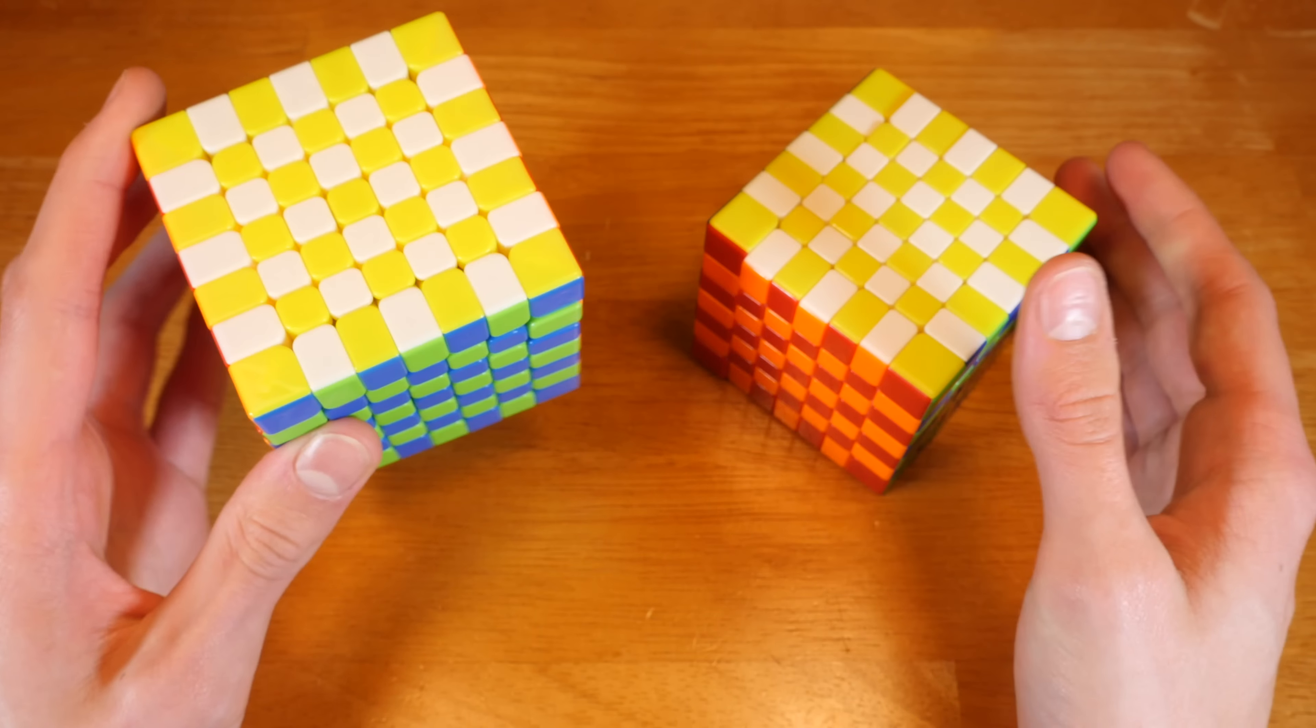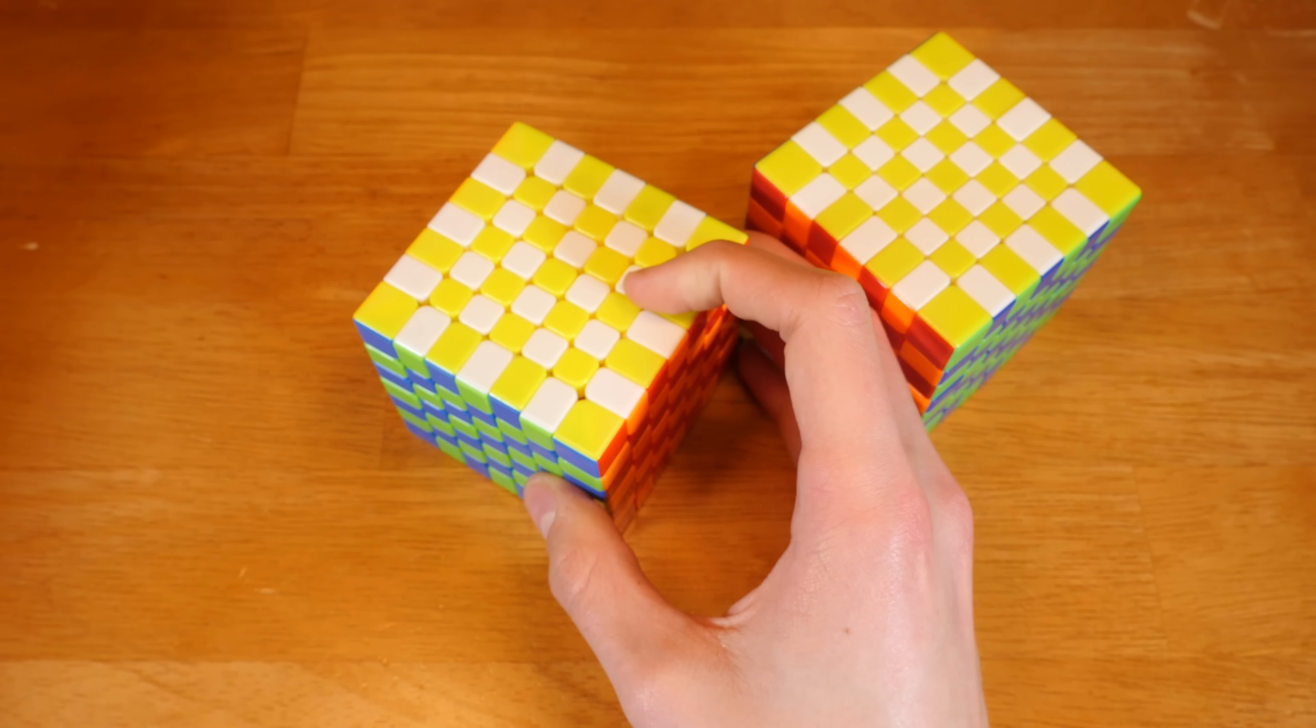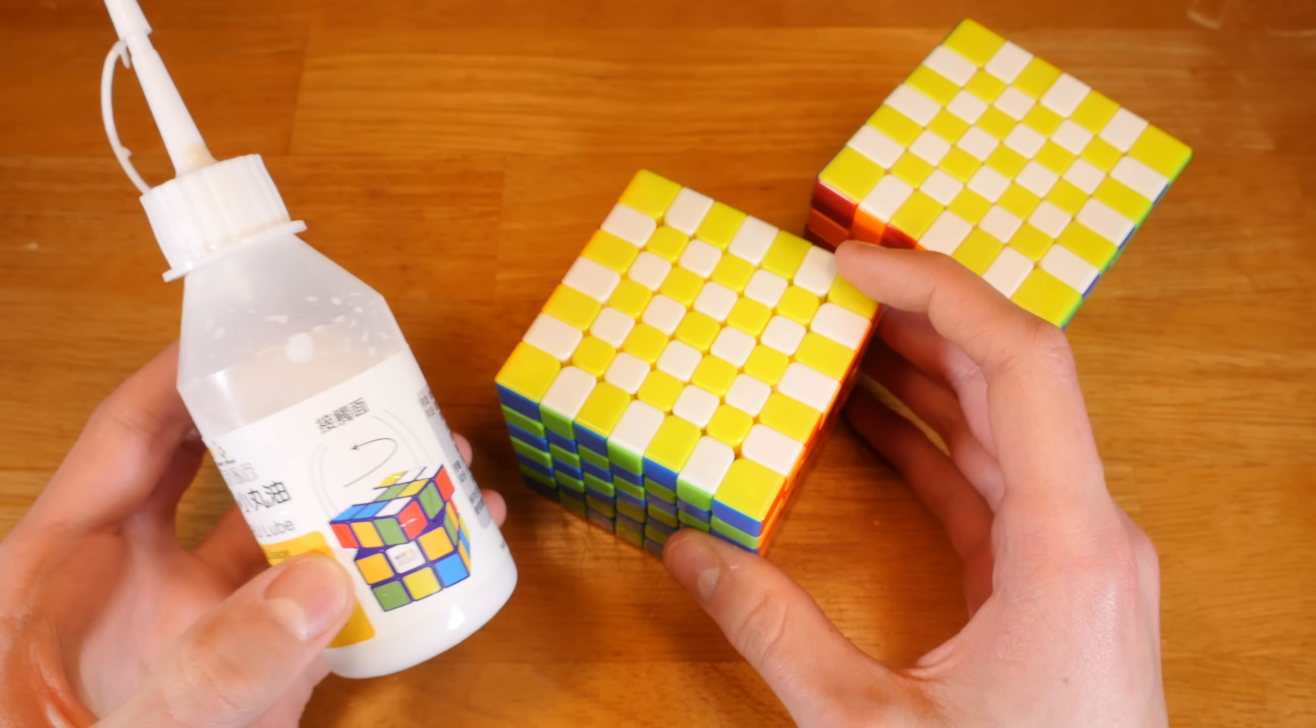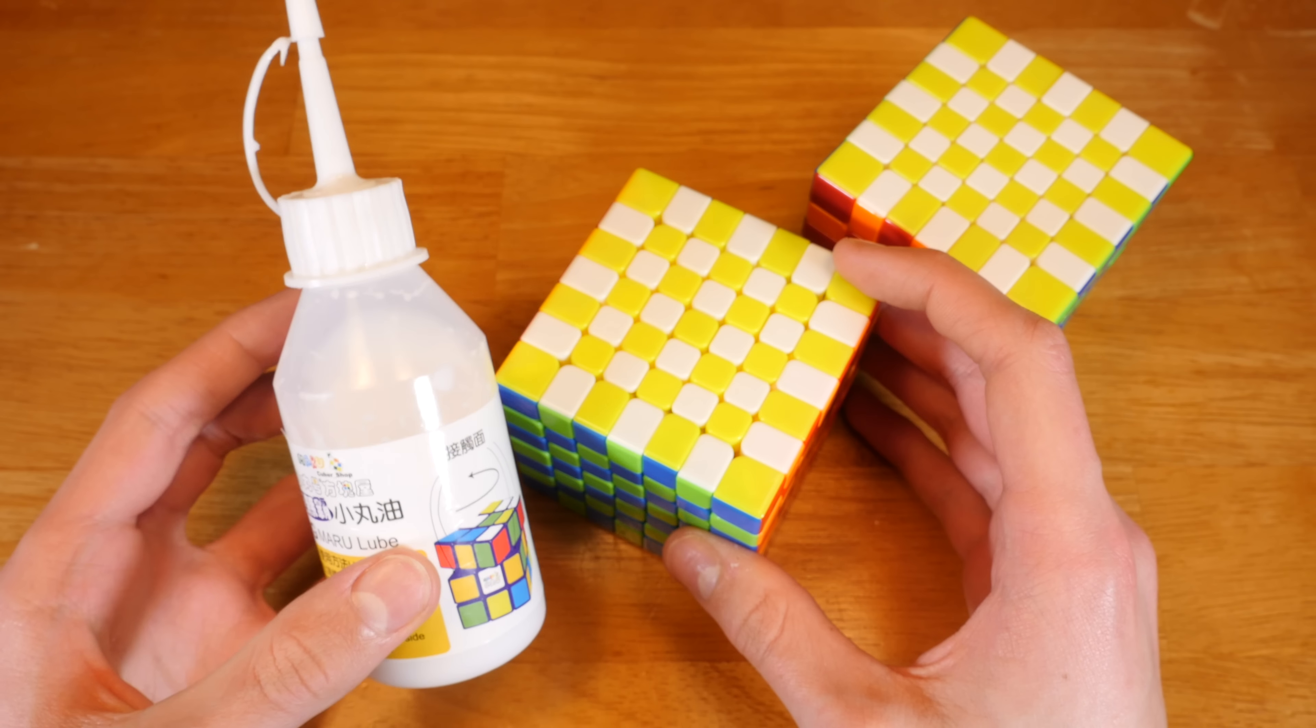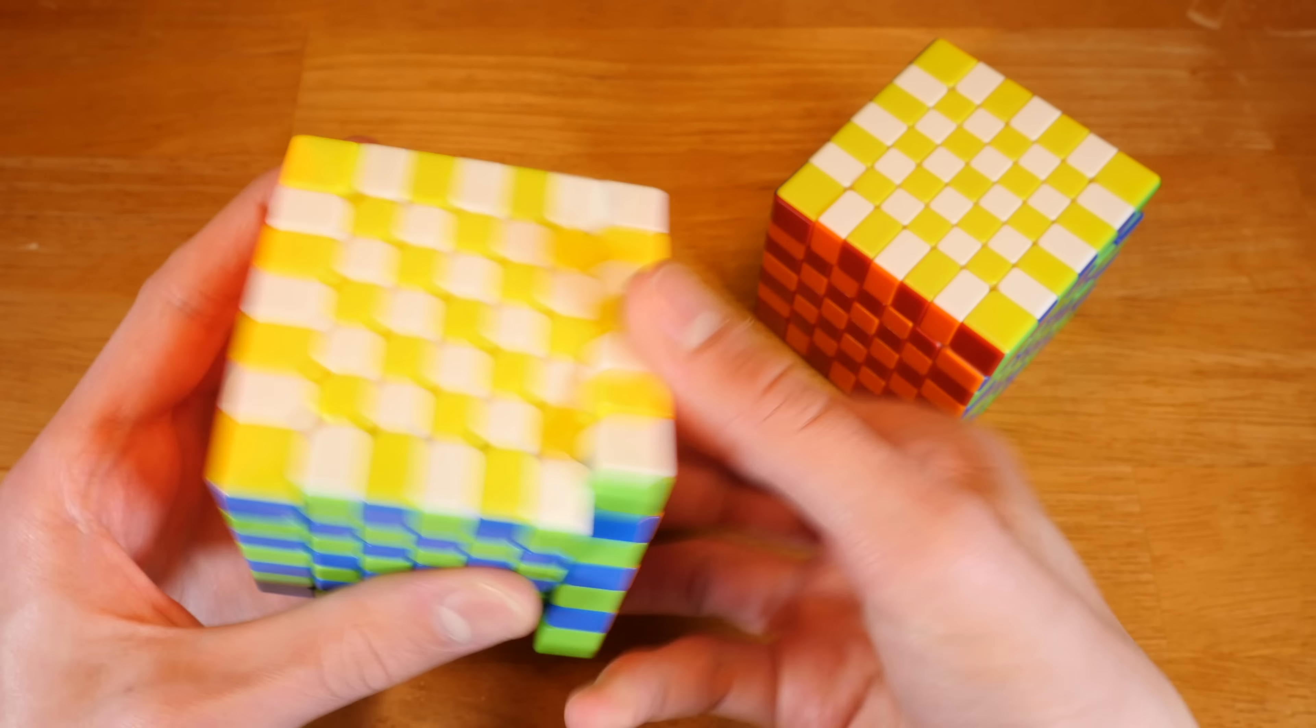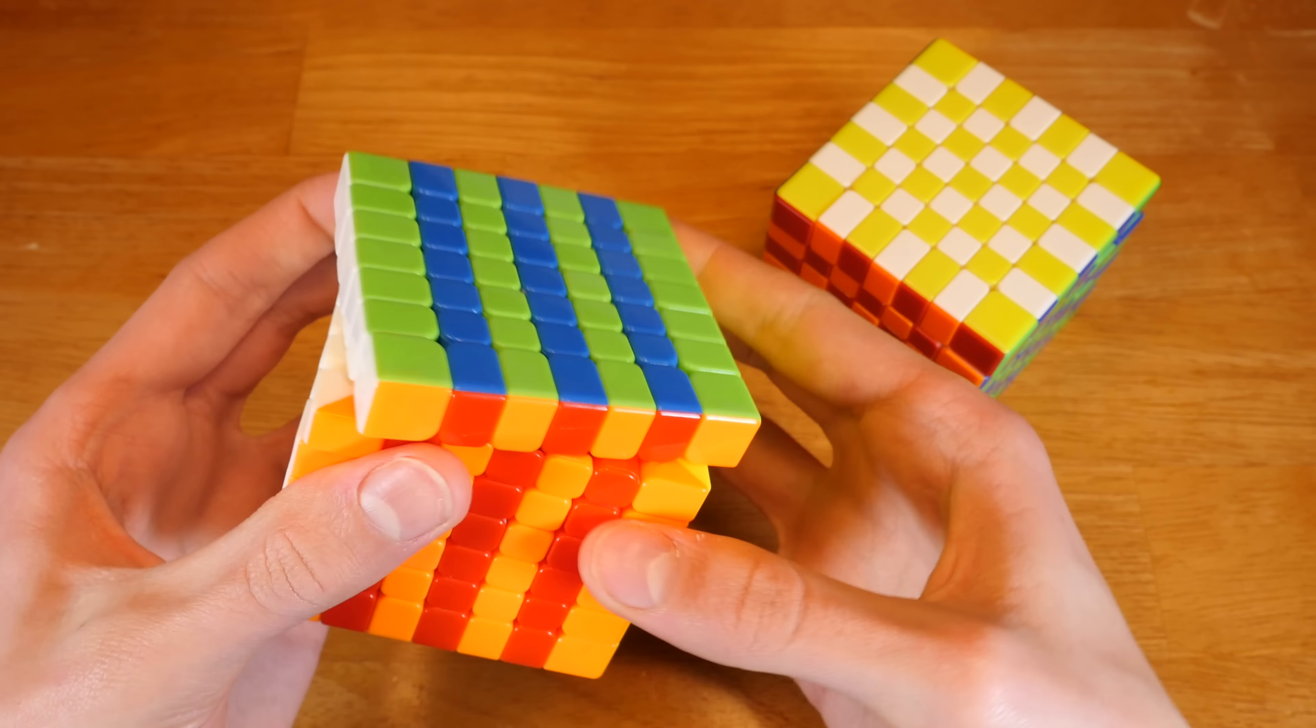For speed, they are about the same speed, really. Make sure you add some Maru because without Maru they are both pretty slow. But add that Maru and you'll have some very, very, very fast 7x7s.